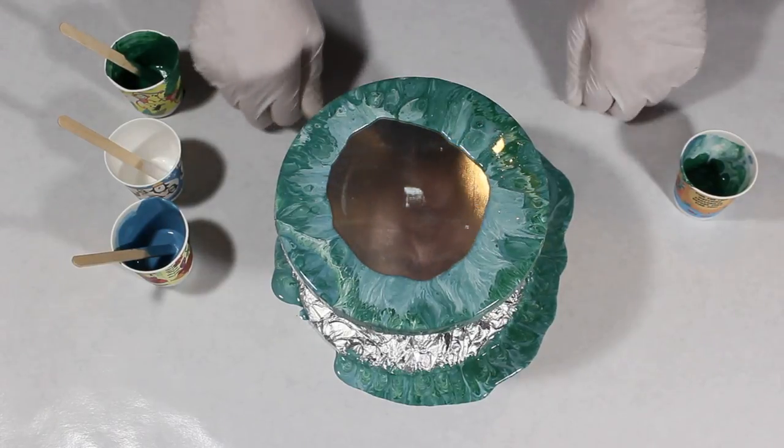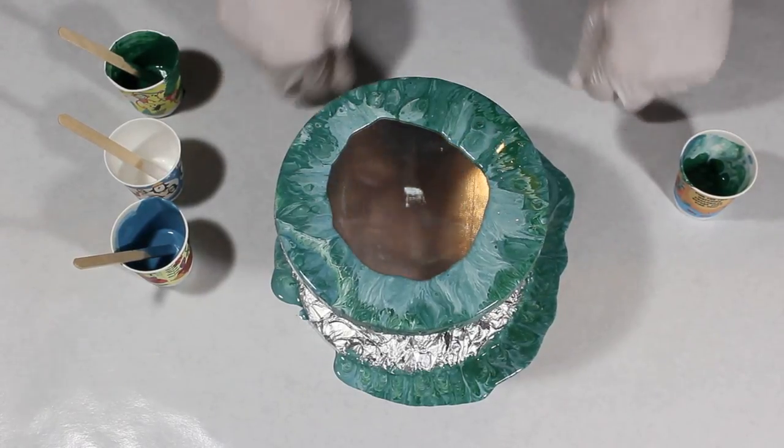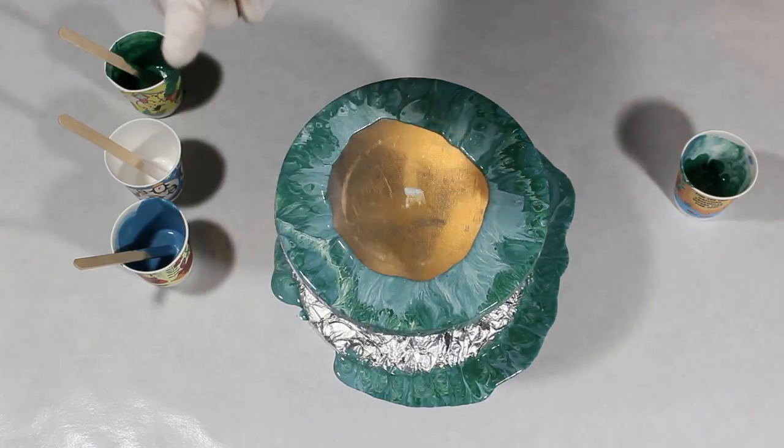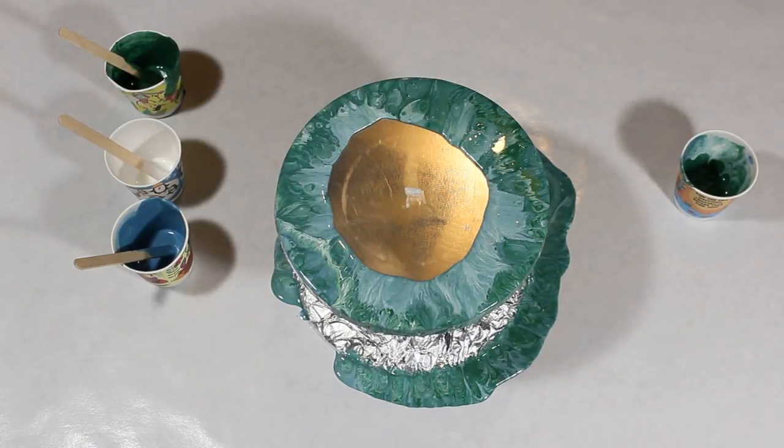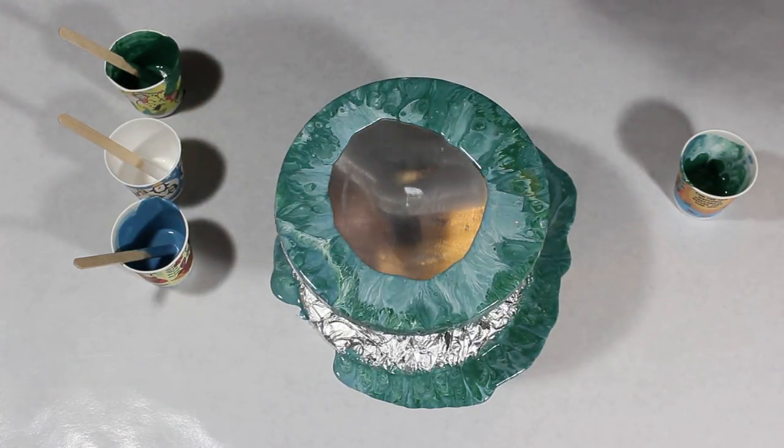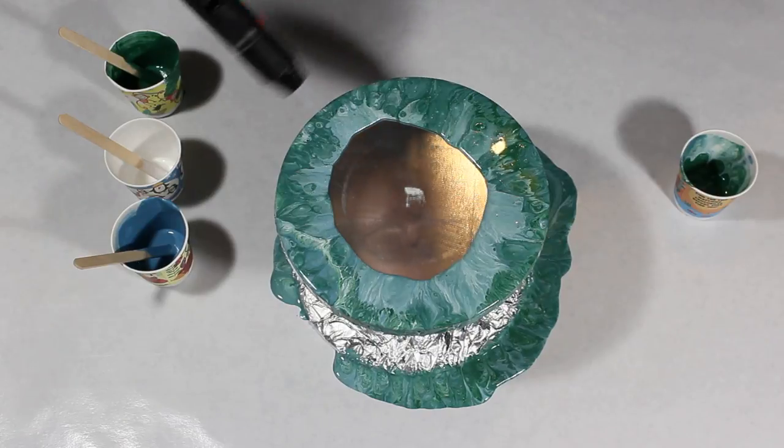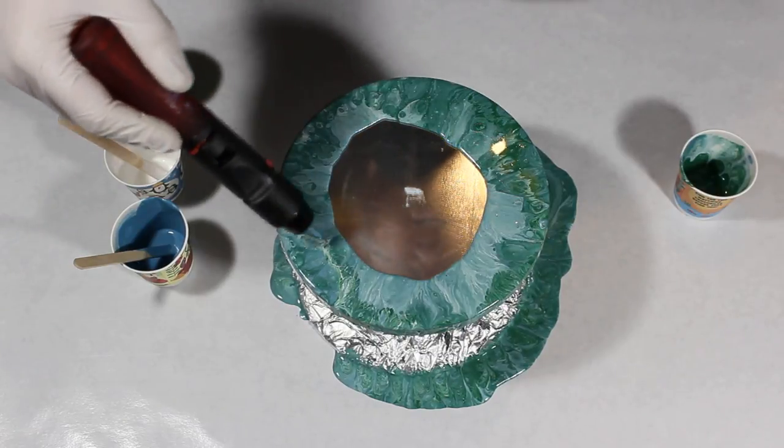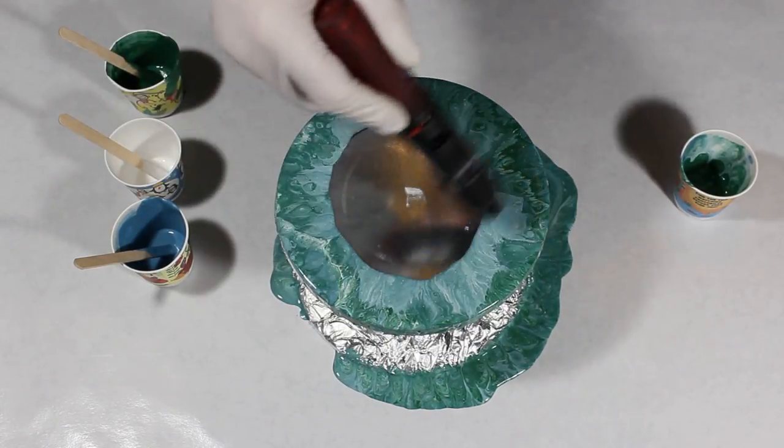I'm going to tap on the table a bit to help get some of the big air bubbles out, and then I'm going to grab my butane torch. Which I should have ready from the start, but here it is. There we go. And get the rest of those air bubbles out.